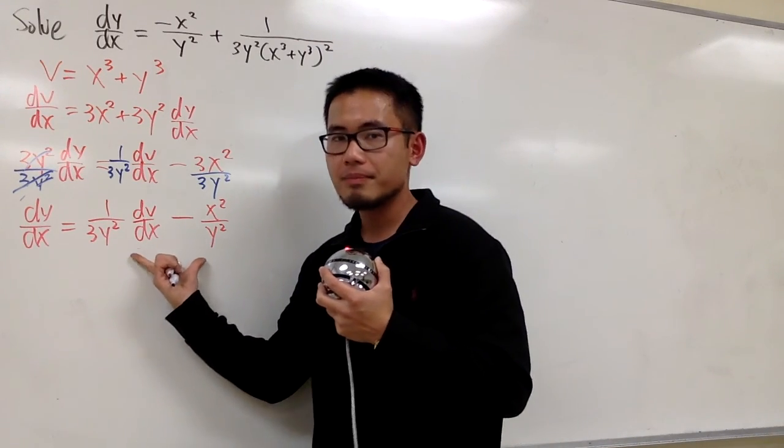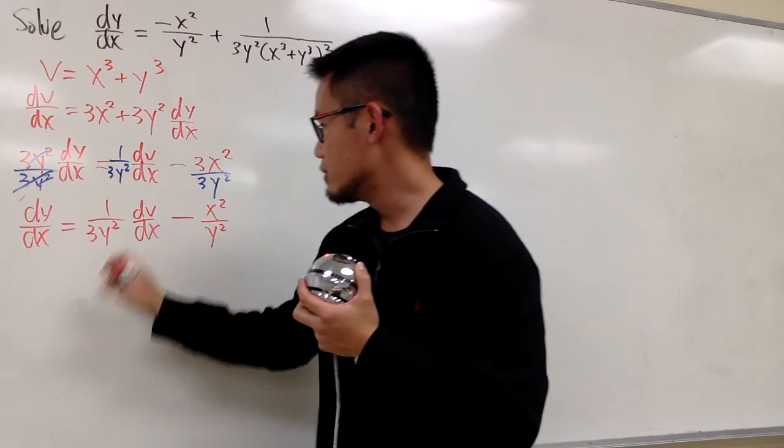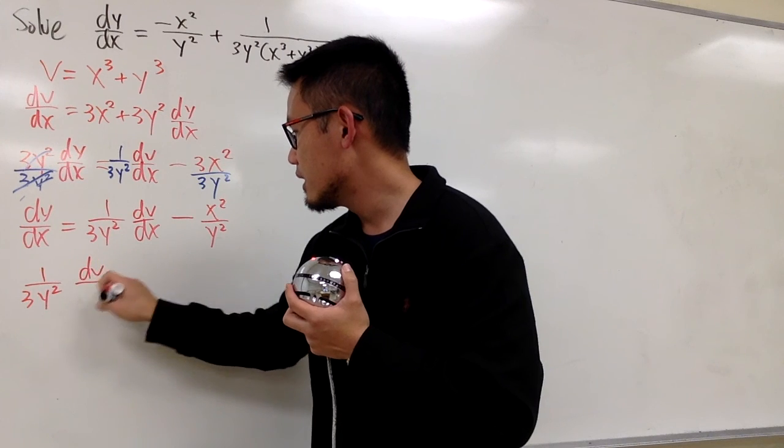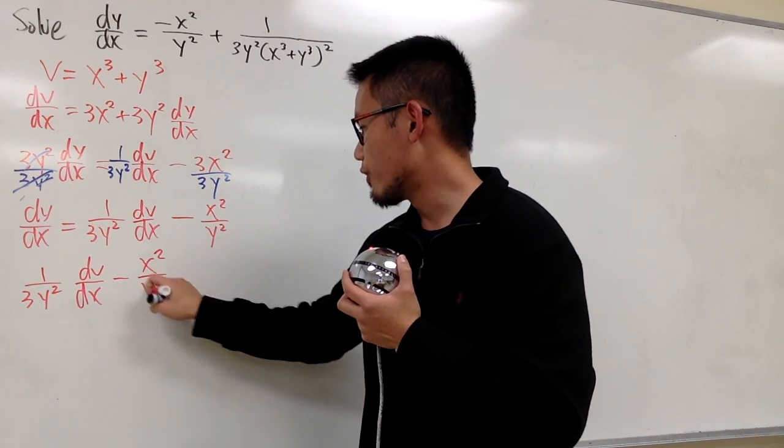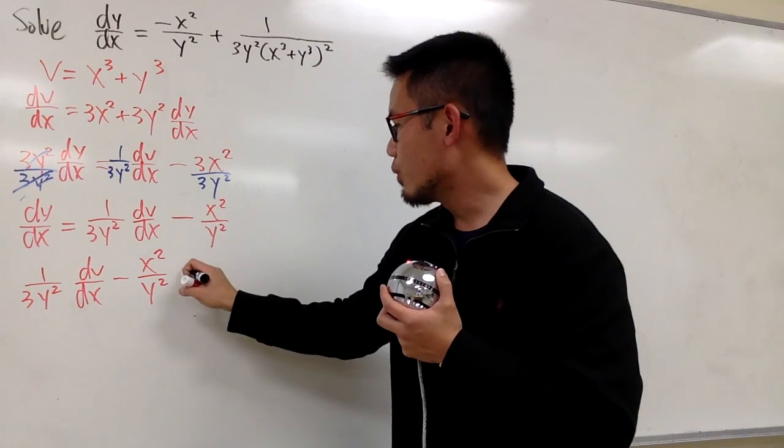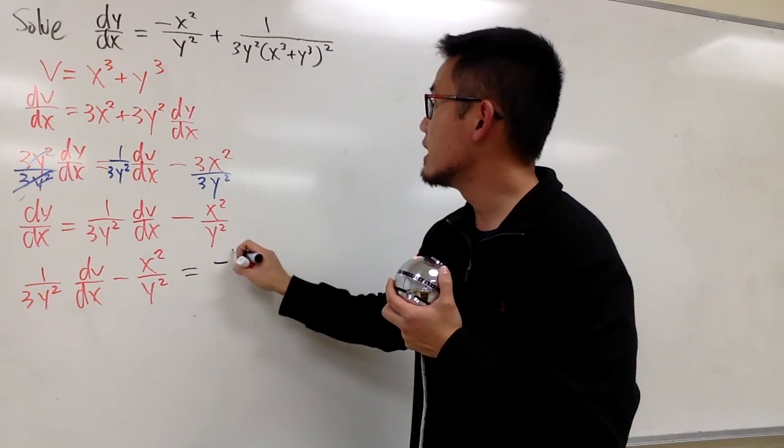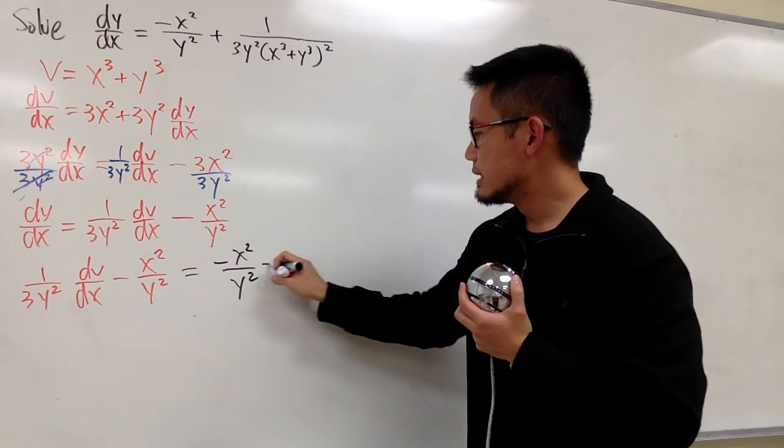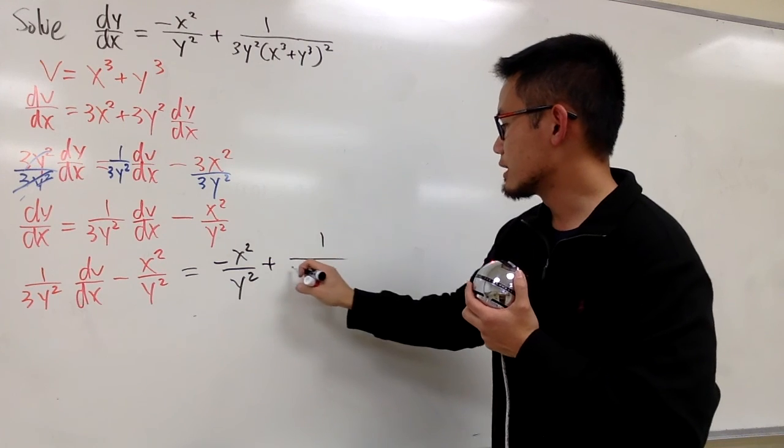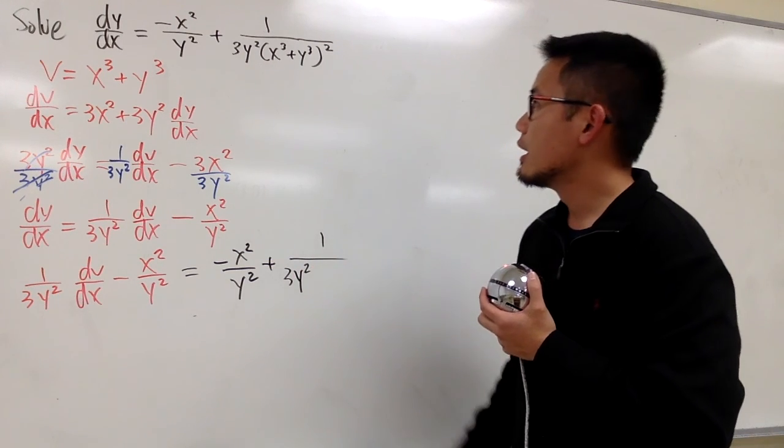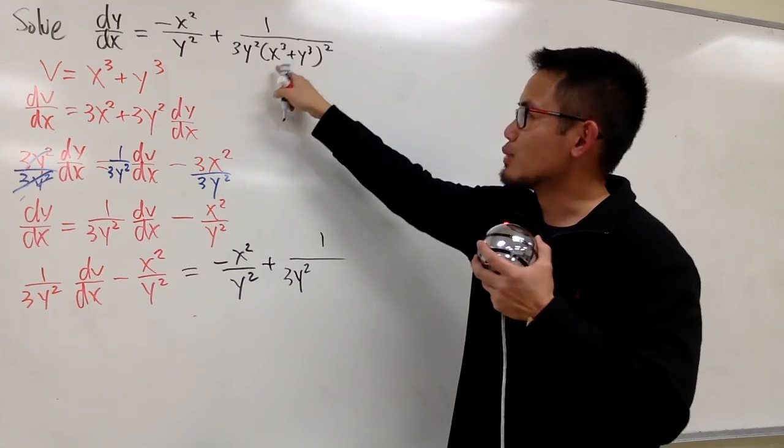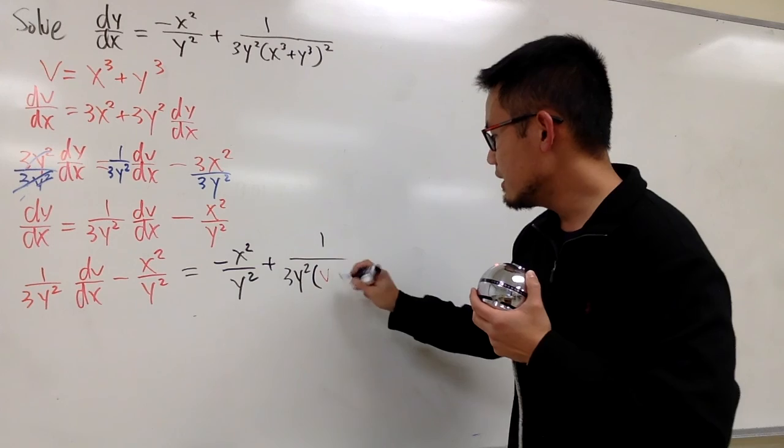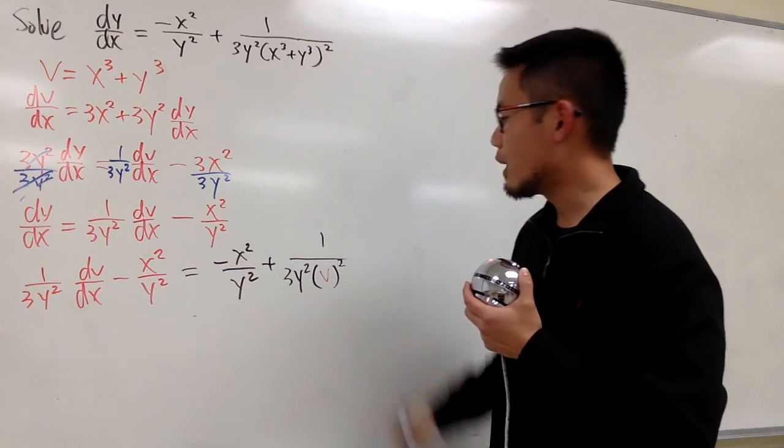So, I'm going to plug in this into dy dx, so let me just write this down, which is 1 over 3y squared dv dx minus x squared over y squared. This is equal to that, which is negative x squared over y squared, plus 1 over, I have the 3y squared right, so let's put down the 3y squared right here. And inside, x squared, so x to the third power plus y to the third power is the v, so let's put this down as parentheses, v, and then to the second power, like this.